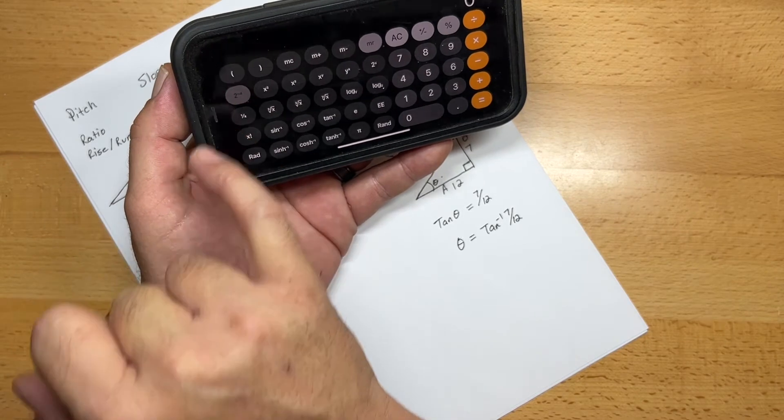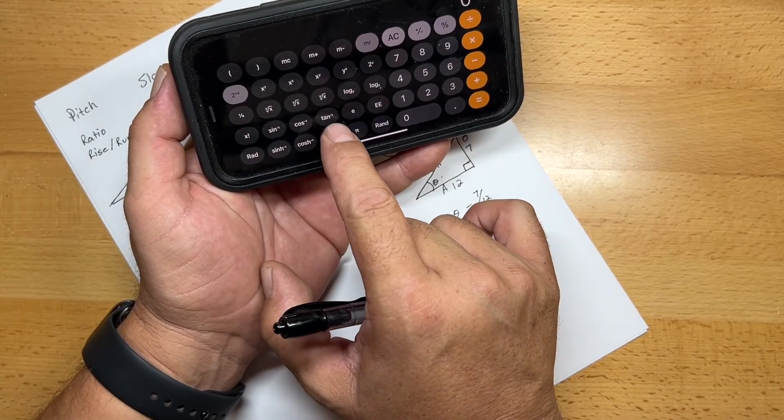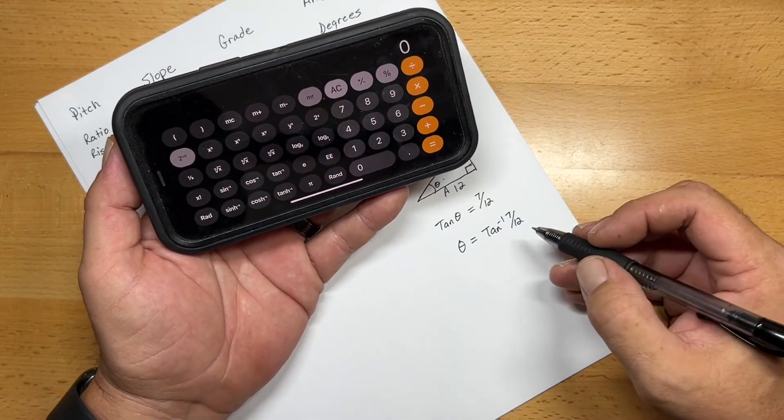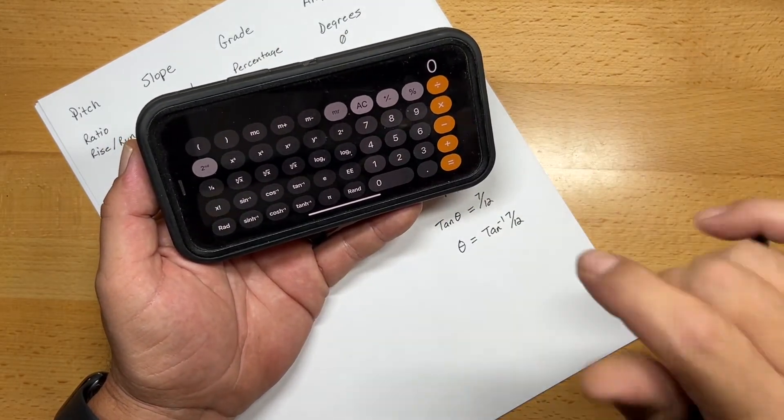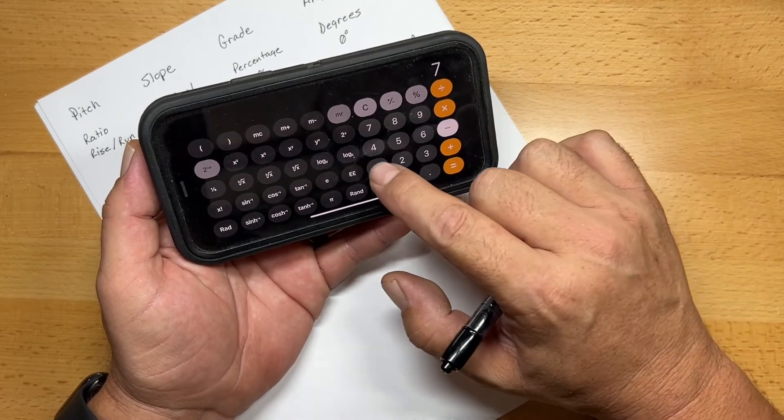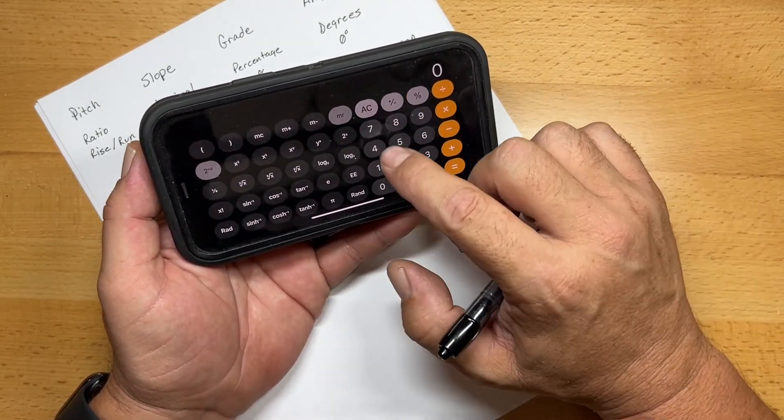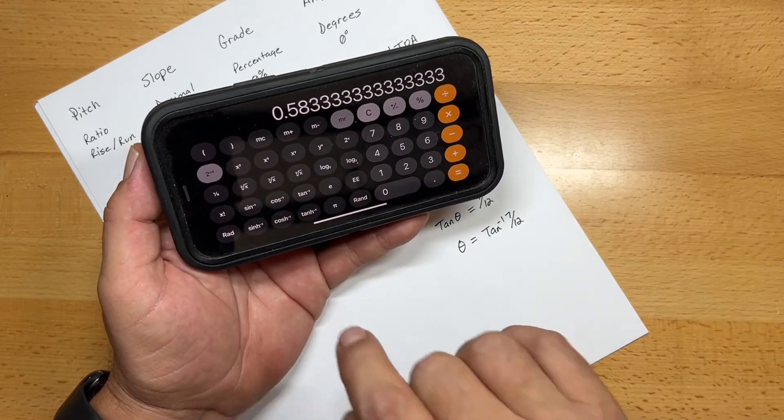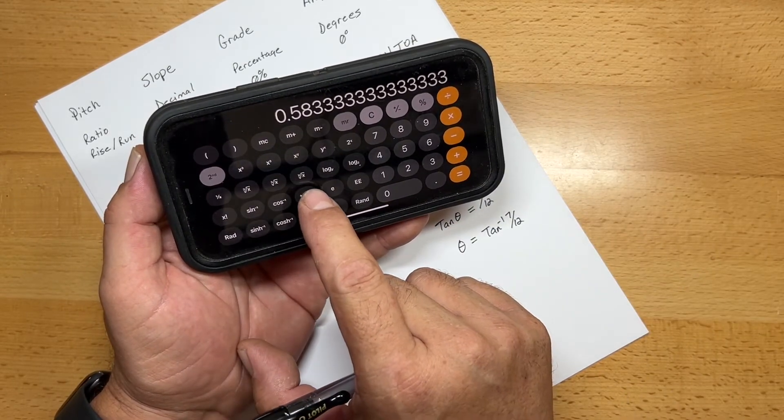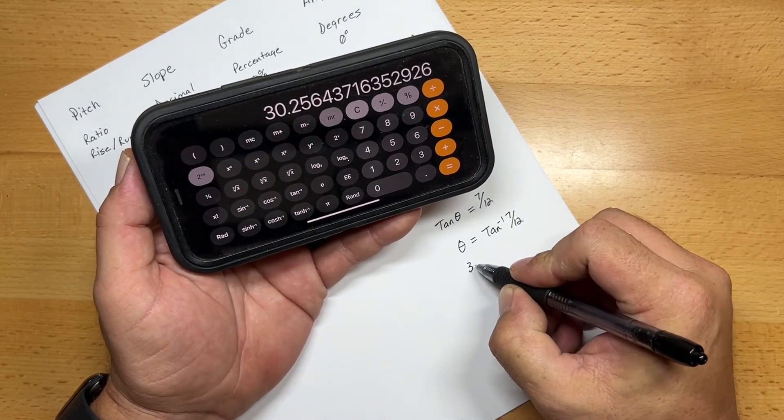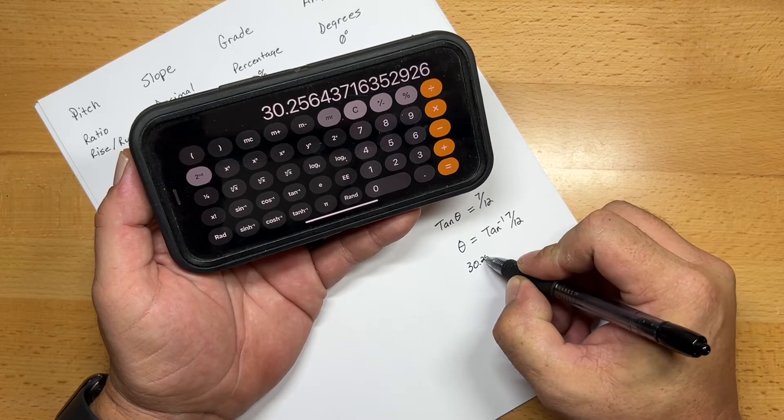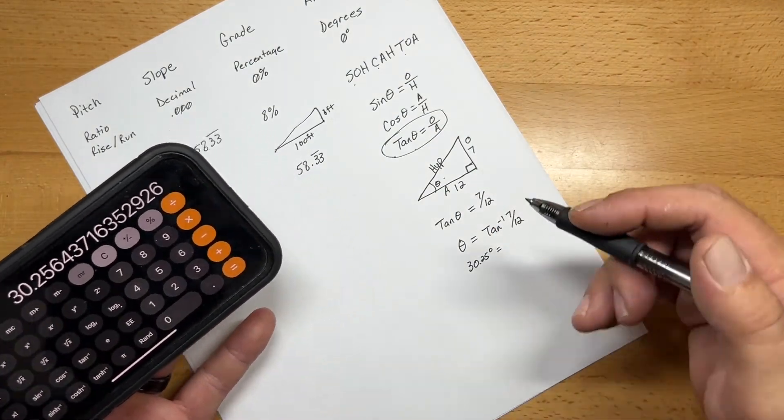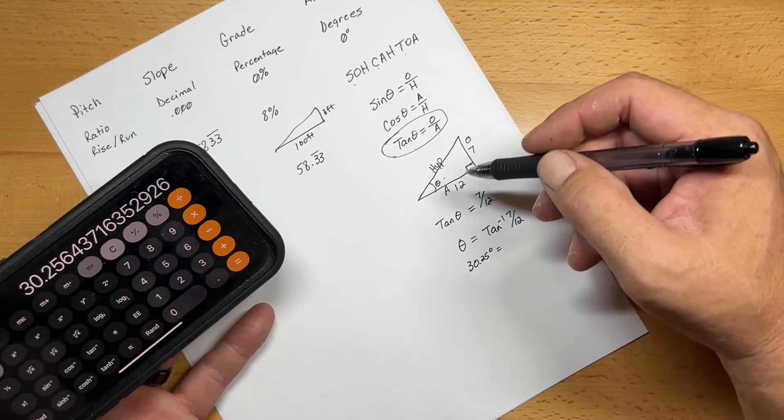So in order to do that, you just hit the second, and that will bring up sine to the negative 1, cosine to negative 1, and tangent to the negative 1. Those are the arc sine, arc cosine, and arc tangent. So now all we have to do is plug in the values. In the iPhone it's a little different. You have to do the ratio first. So we'll have to do 7 divided by 12, hit the equal sign, and that's our 0.583 repeating. Now all we have to do is hit the second, make sure that we are hitting the arc tangent, and that will give us our degree. So our degree is equal to approximately 30.25 degrees.